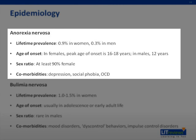A diagnosis of AN is often accompanied by comorbid disorders. Studies have shown that depression occurs in 65% of cases, social phobia in 34%, and obsessive compulsive disorder in 26% of cases.